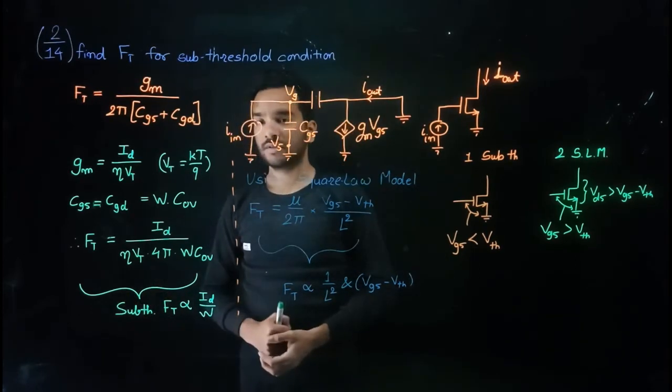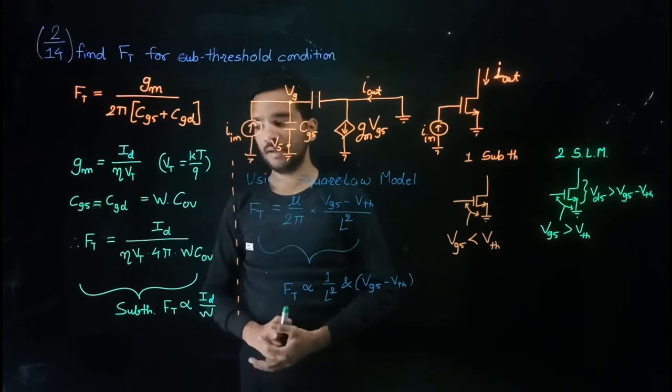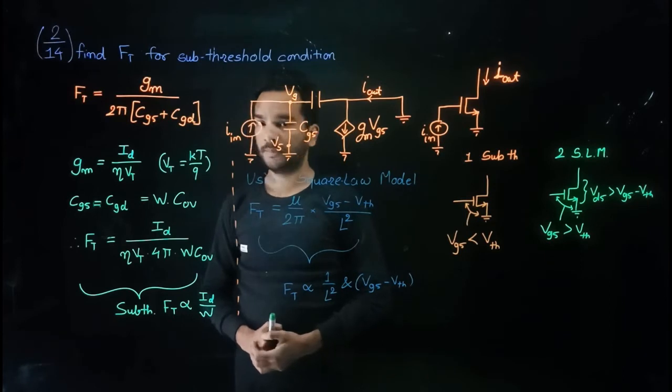We will get equation of Ft is equal to id by eta vt over pi into width c over that.